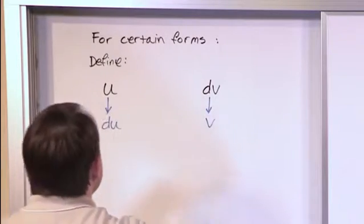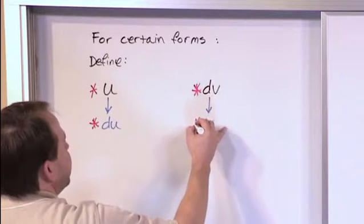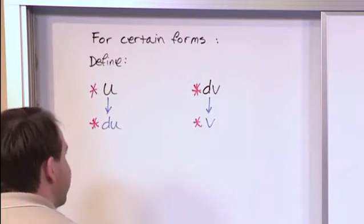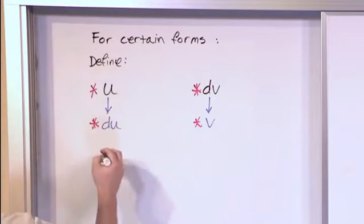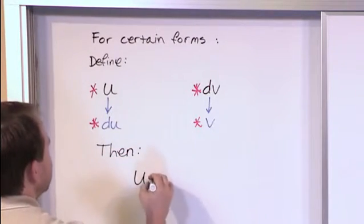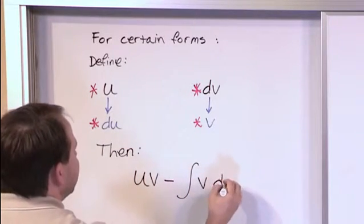I'm putting a little star by them because as I work problems, I'm actually going to asterisk when you've found all four pieces of the puzzle. And once you have all four pieces of the puzzle in place, then integration by parts is u times v minus the integral of v times du. This is integration by parts.